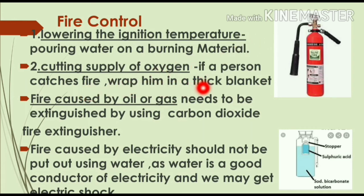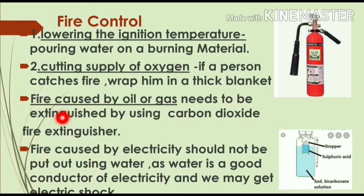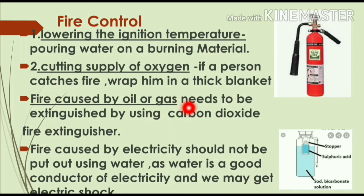Second, we can cut the supply of oxygen. For example, if a person catches fire, we can wrap them in a thick blanket — the blanket will cut off the supply of oxygen and the fire goes out. However, we must be cautious about what type of fire it is. If the fire is caused by oil or gas, we cannot use water, because oil is lighter than water, it rises to the surface, continues to get oxygen, and keeps burning.